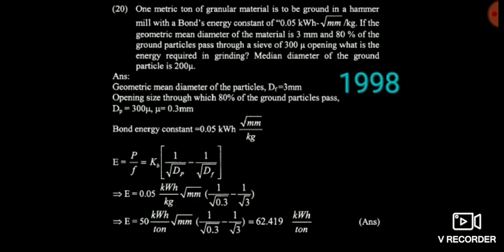Now see another question. Here the question is very good. It says one metric ton of granular material, Bond's energy constant value is 0.05 kilowatt hour root mm per kg, 80% of the material has mean diameter of 3 mm, and 80% material passes through a sieve of 300 micron. Many students are confused — they think about only 80% of the feed. Don't make such mistakes. The 80% is the ideal reference value for material passing through the sieve.